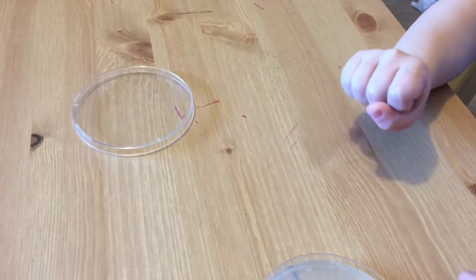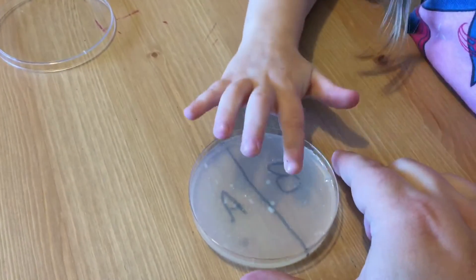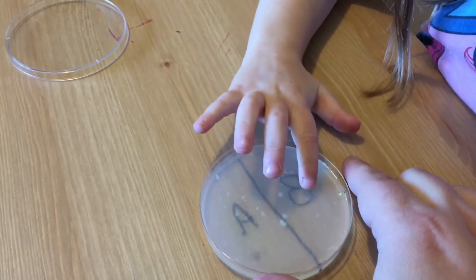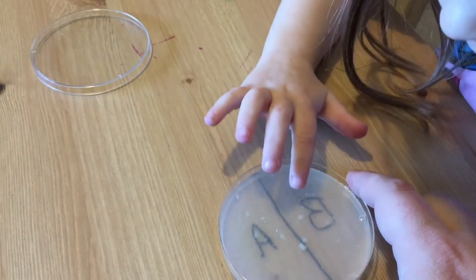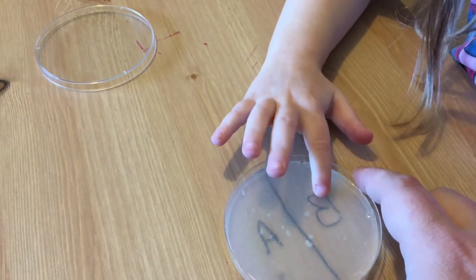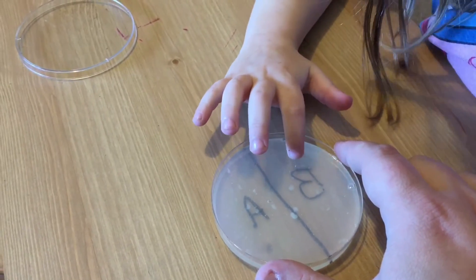All right, now that we have washed our hands thoroughly, we are going to take our clean hands and we are going to rub them on the B side. So go ahead Carmen and gently rub on the B side. Yep, gently, gently rub. Nothing's gonna happen yet. You're just gonna rub on the B side.